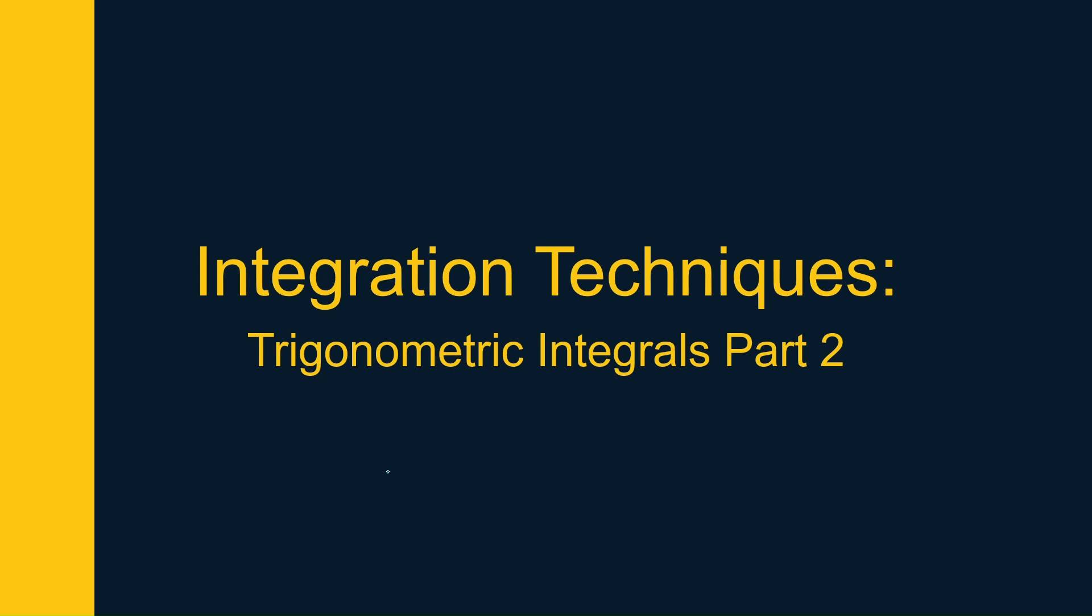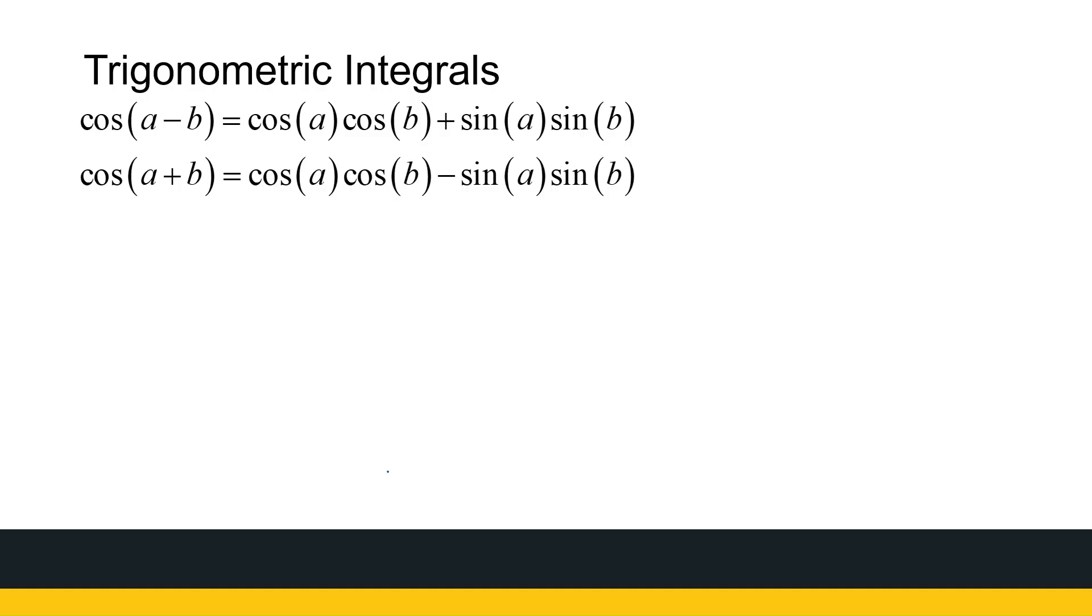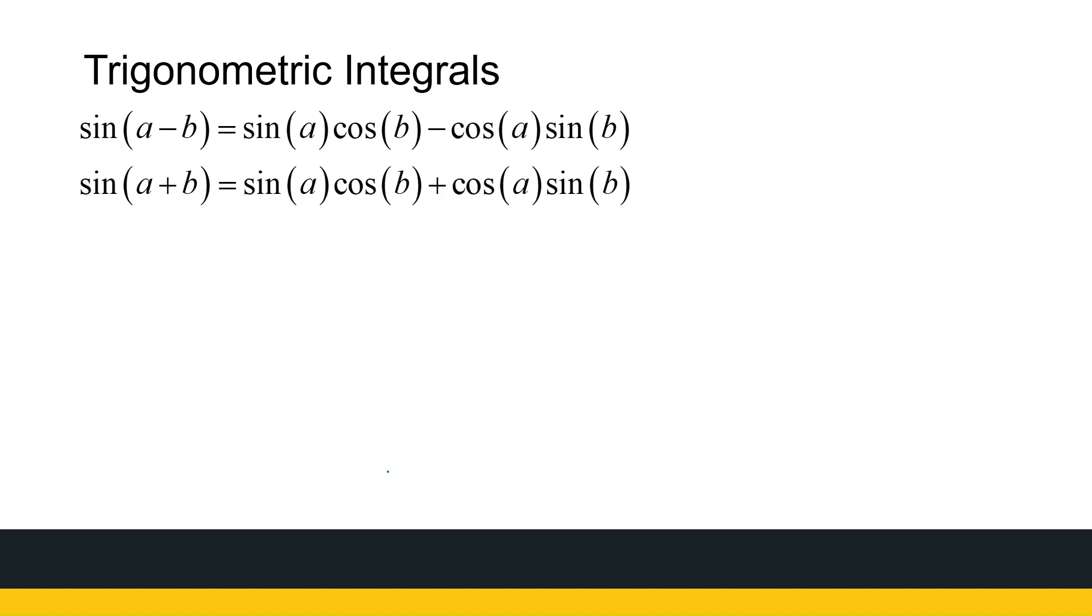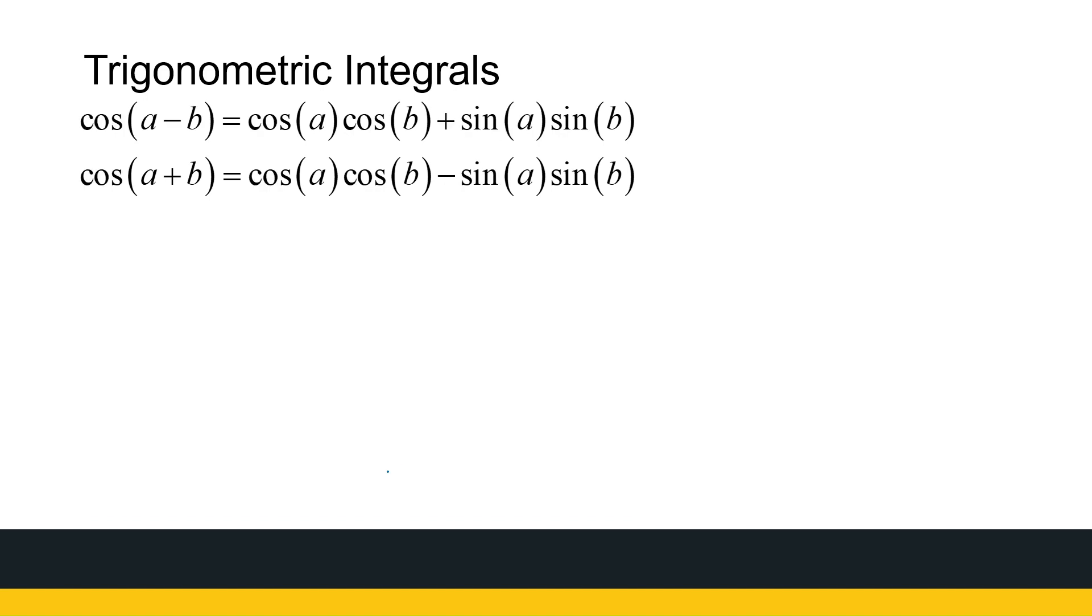Looking at some more trigonometric integrals, we're going to be using the sum and difference between two angles formulas that you've seen before. So here are the two for cosine: cos(a - b) and cos(a + b). There are similar identities for sin(a - b) and sin(a + b). So let's see how we're going to use these to simplify trig integrals.